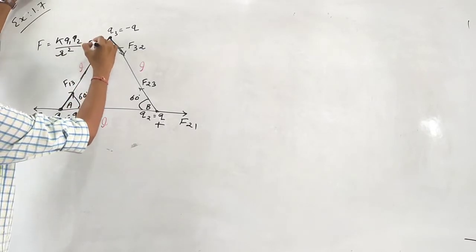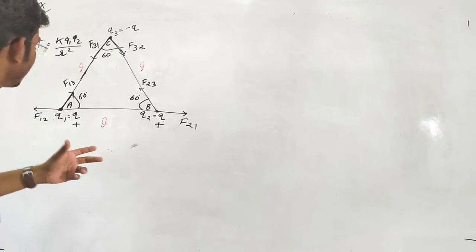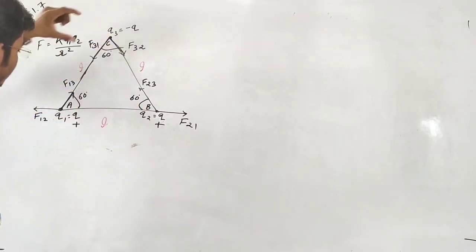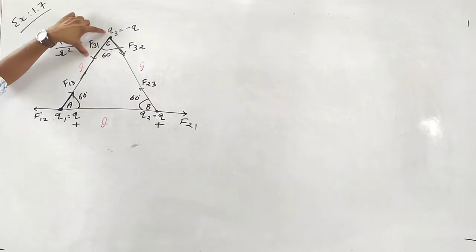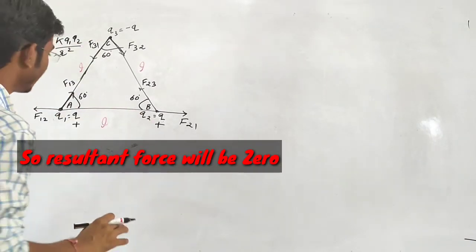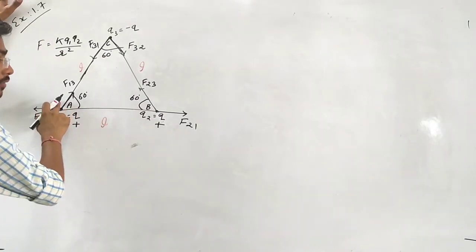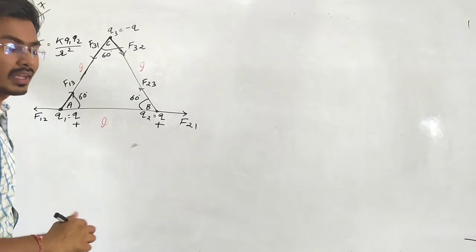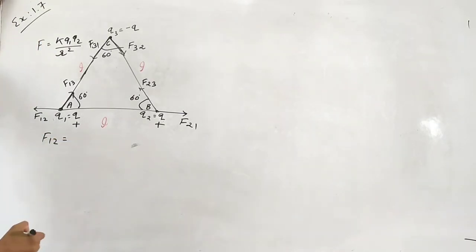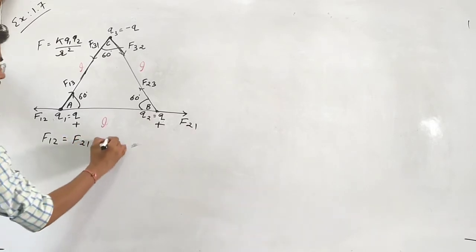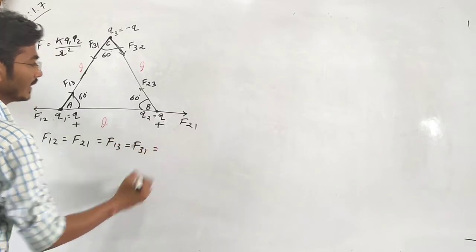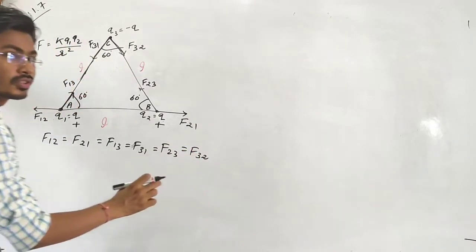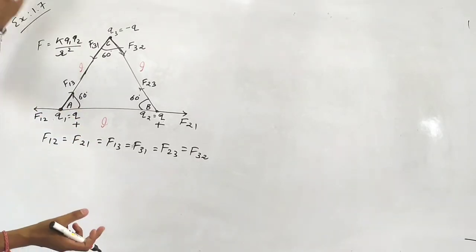F13 acts in this direction. Now, F31 equals F23 equals F32, which means all these forces have the same magnitude, since all sides of the equilateral triangle are equal (length L), so the distances are the same.